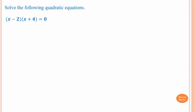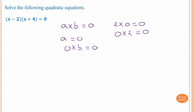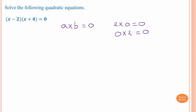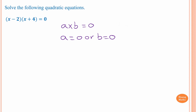First one — if we have a times b equal to zero. We know that two times zero is zero, or zero times two is zero. Zero times anything is zero. So if a times b equals zero, that means either a equals zero or b equals zero.